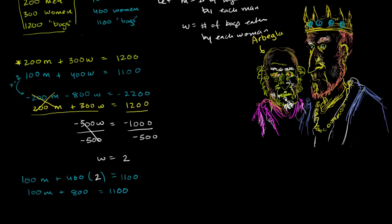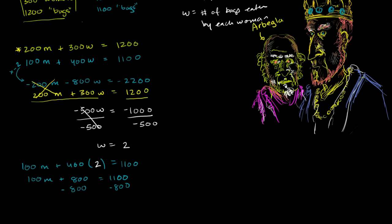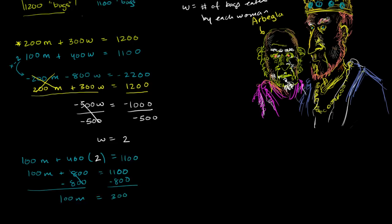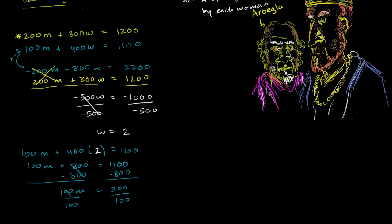So you have 100 m plus 800 is equal to 1,100. And now to solve for m, we can subtract 800 from both sides. Let's subtract 800 from both sides. And we are left with 100 m is equal to 300. And now divide both sides by 100. And we are left with m, which is, on average, the number of bags of chips each man eats is equal to 3.